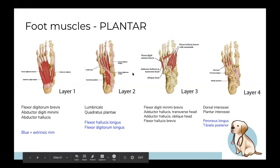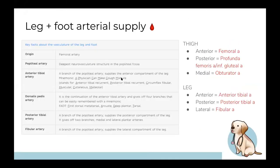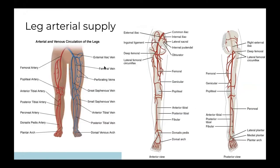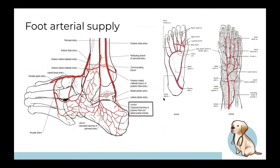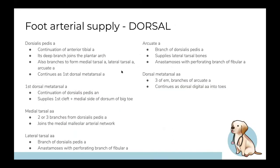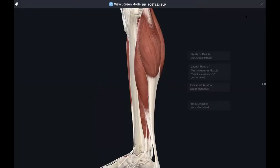We won't cover foot muscles in detail as they're very layer-by-layer. Let's move on to arterial supply. The three major vessels are the anterior tibial, posterior tibial, and fibular arteries. Start by memorizing a simple diagram like this before getting into branches — make some image occlusion on Anki and you'll have it in no time.